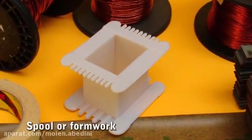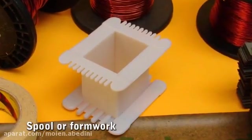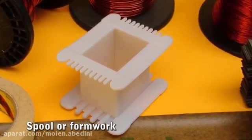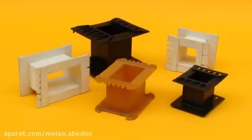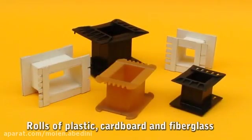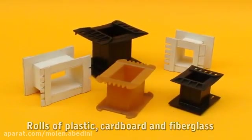Formwork. A square reel is used as support for winding the wire and preventing spreading, helping the smooth narrow of the wire. The formwork are available in various materials such as plastic, cardboard, and fiberglass.